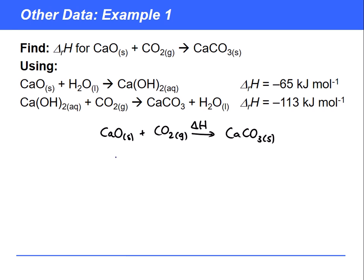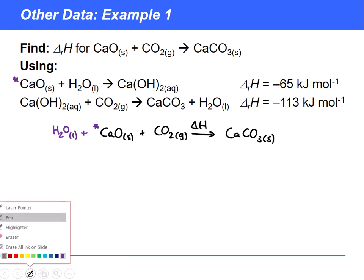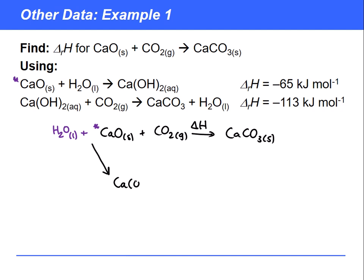I start on the left-hand side and think: which of the other reactions contains one of the species on the left-hand side? We can see that calcium oxide appears here as well, so we're going to want to use this reaction to complete our cycle. Calcium oxide plus water goes to give aqueous calcium hydroxide. Carbon dioxide on this side hasn't reacted at all, so it stays unchanged, and the enthalpy change for this step is -65 kJ/mol.